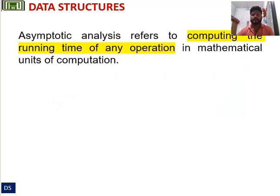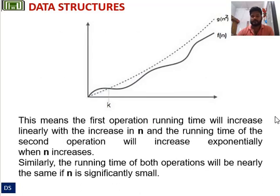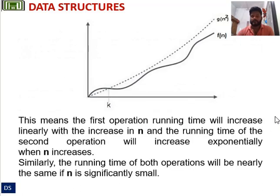Asymptotic analysis refers to computing the running time of any operation in mathematical units of computation. For example, the running time of one operation is computed as f(n), and for another operation it is computed as g(n²). These are the functions f(n) and g(n).